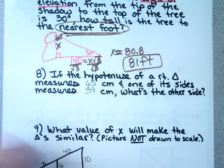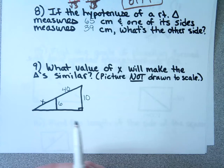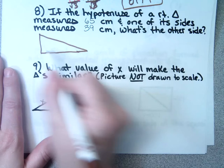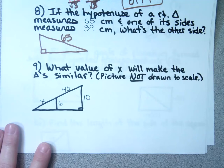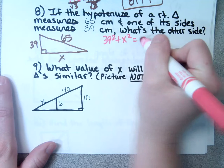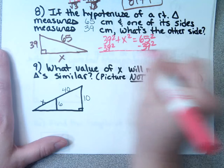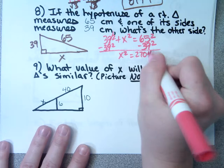Number 8: if the hypotenuse of a right triangle measures 65 and one of its sides measures 39, what's the other side? I'll draw a picture. The hypotenuse is 65, one side is 39, and we use Pythagorean theorem: 39² + X² = 65². Subtract 39² from both sides, then take the square root. It comes out to a nice 52.